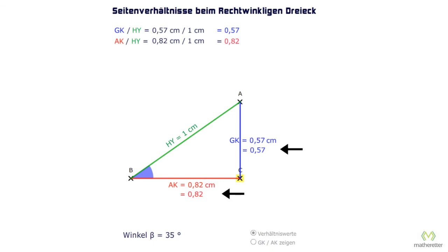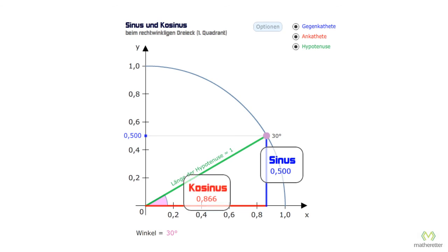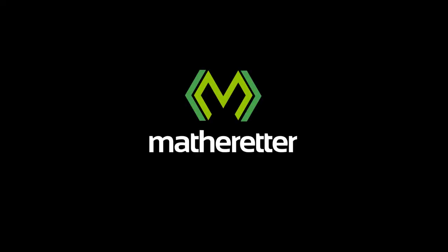Let's take a closer look to help us recognize that better. More on this in the next part, in which we will look at the terms for the aspect ratios: namely the aspect ratio of the opposite, which is called sine, and the aspect ratio of the adjacent, which is called cosine.